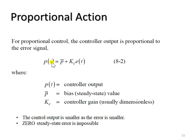The control output is smaller as the error is smaller. Zero steady-state error is impossible. So this is a common issue in proportional control.